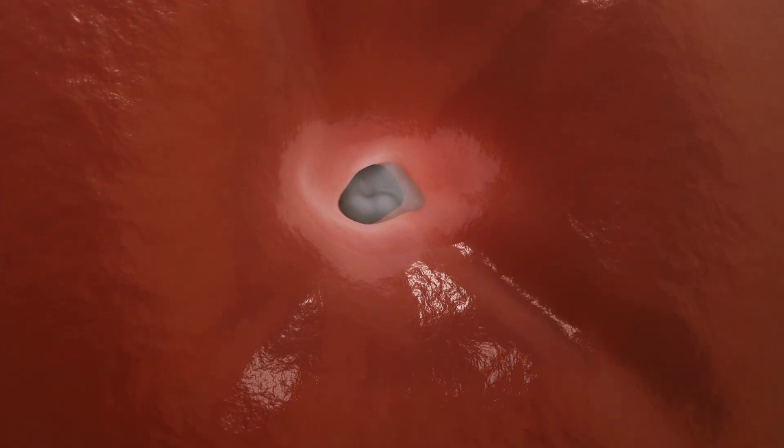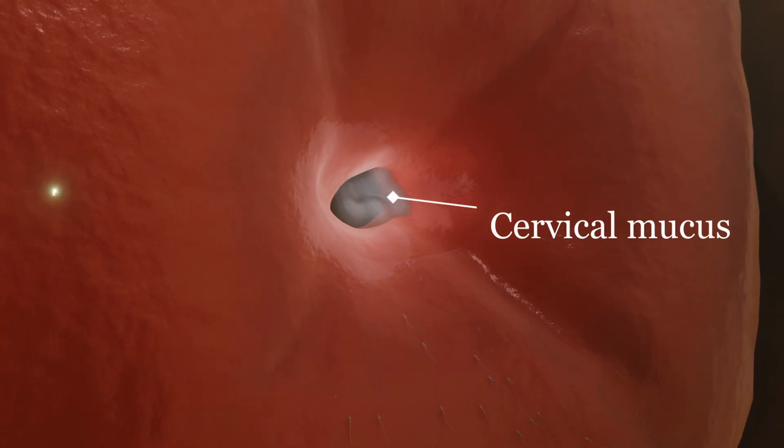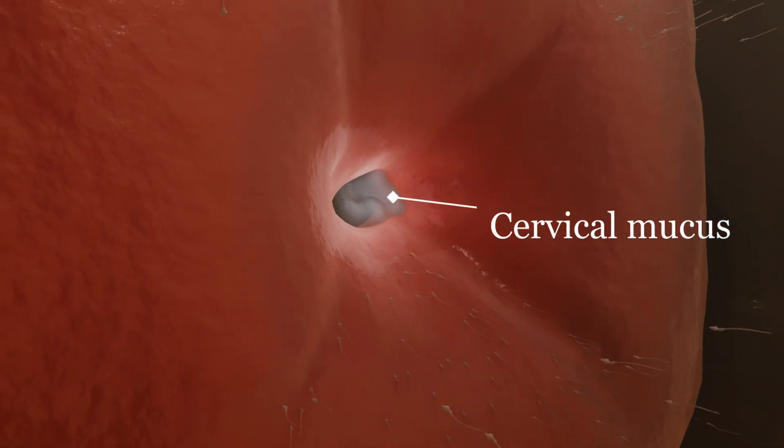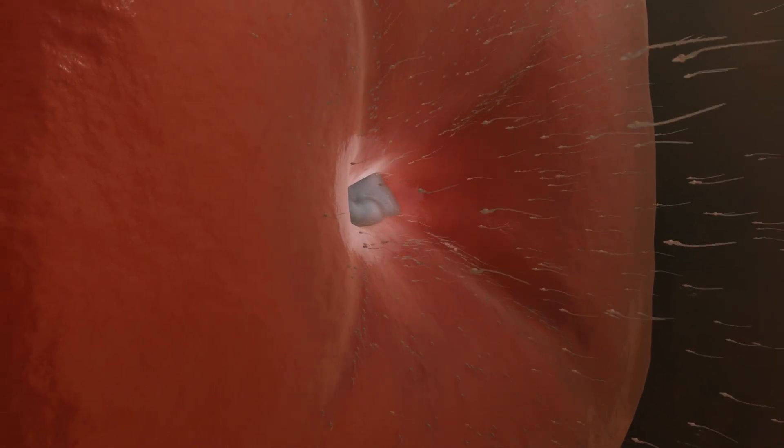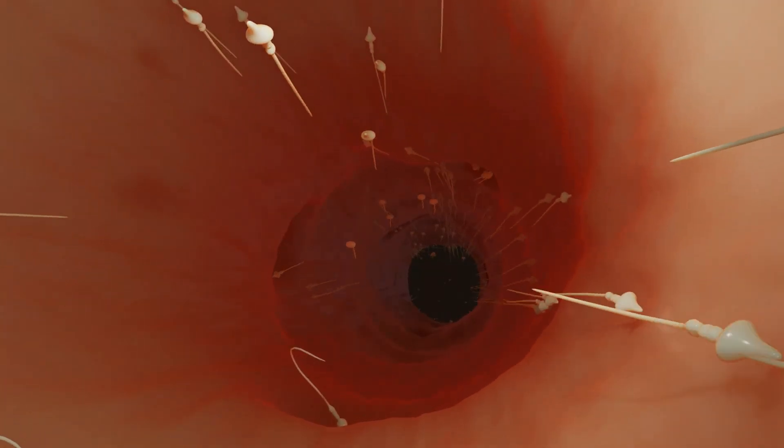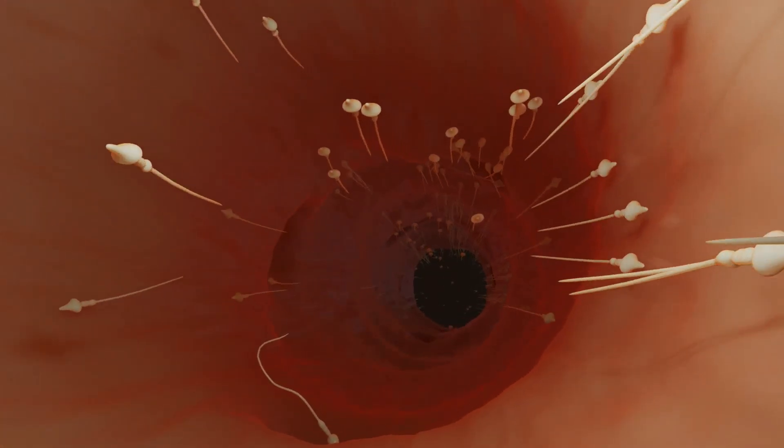The change in the viscosity of the cervical mucus also aids fertilization. Several days before and after ovulation, the mucus becomes less viscous, making it easier for the sperm to pass through. Nonetheless, for many cells, this is an insurmountable hurdle.